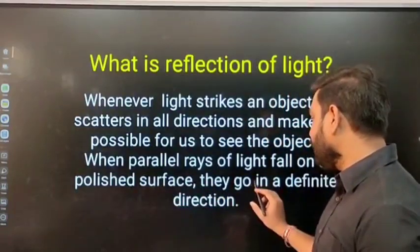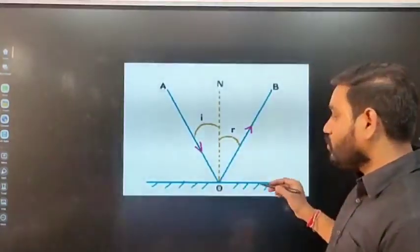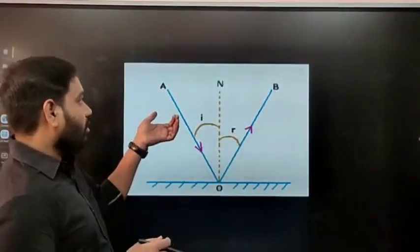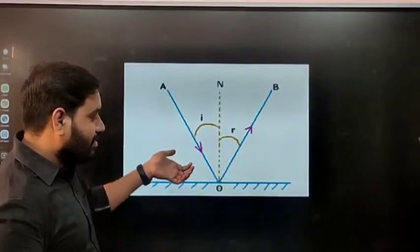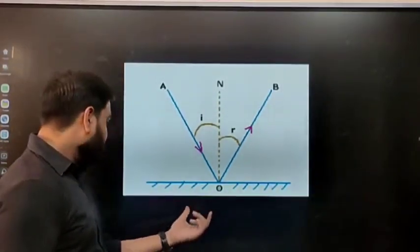So we can see the light rays are coming down on the mirror, that is polished mirror.